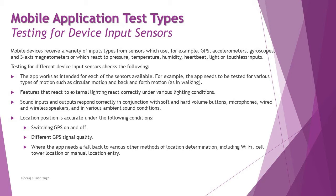Location position accuracy must be tested under conditions such as switching GPS on and off, different GPS signal quality, and fallback to other location determination methods including Wi-Fi, cell tower location, or manual location entry. Location accuracy can vary based on multiple factors, so all of these need to be covered if your app interacts with location sensors.